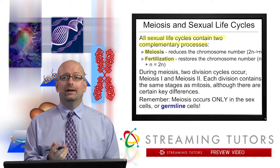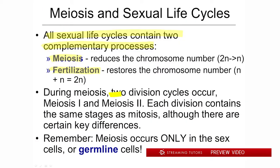During meiosis, two complete division cycles occur: meiosis I and meiosis II. Each division has the same stages as those in mitosis — prophase I, metaphase I, anaphase I, telophase I, then prophase II, metaphase II, anaphase II, and telophase II. There are similarities with the corresponding phases in mitosis, but there are also some key differences. In this session we're going to highlight the differences, not recapitulate everything discussed about mitosis.